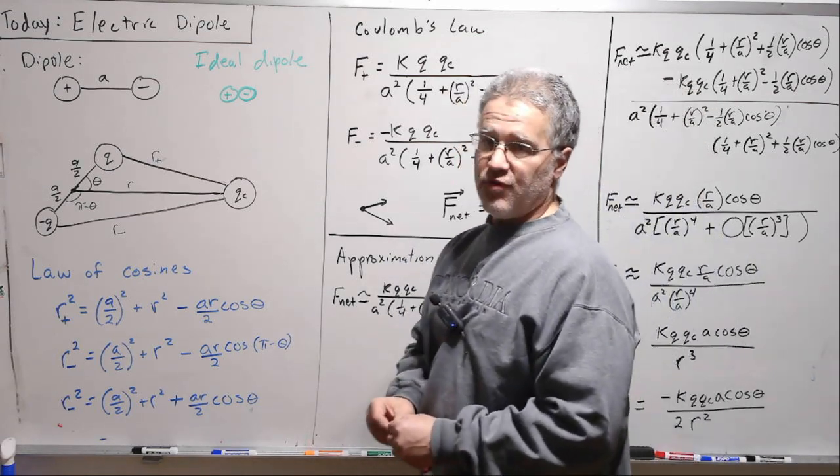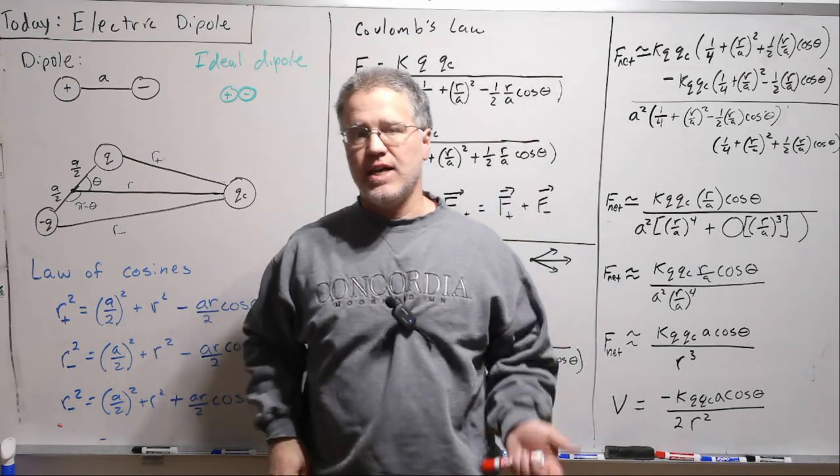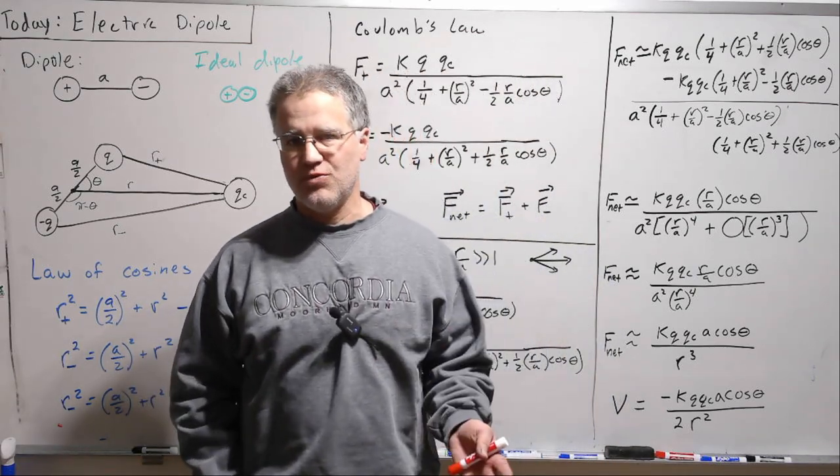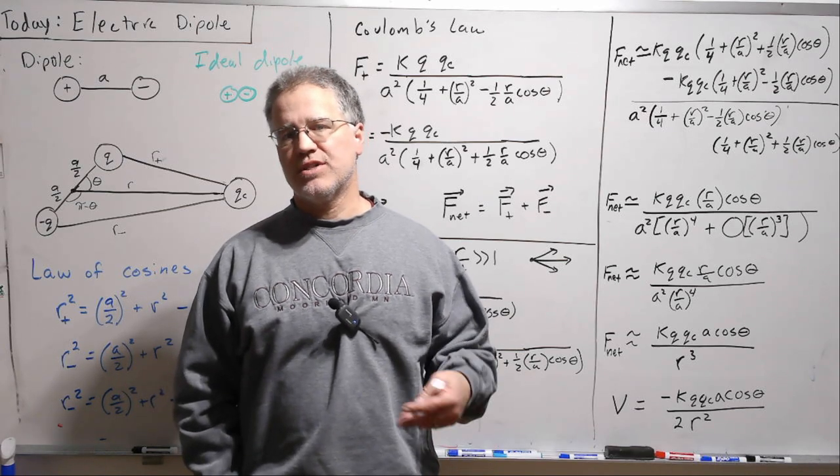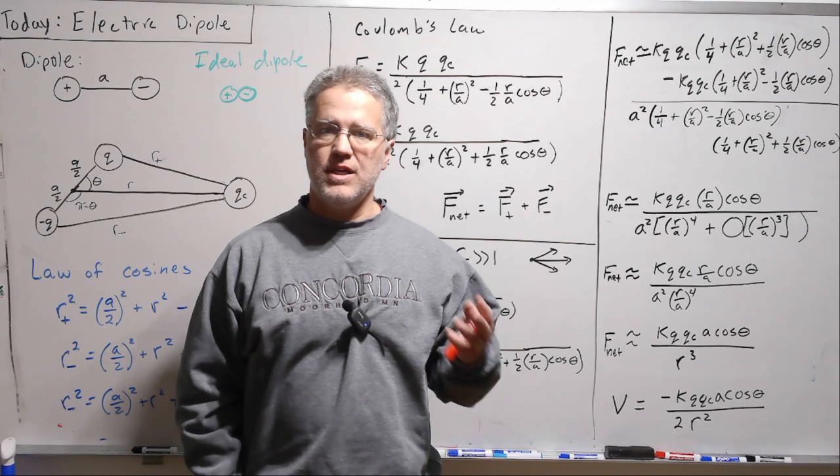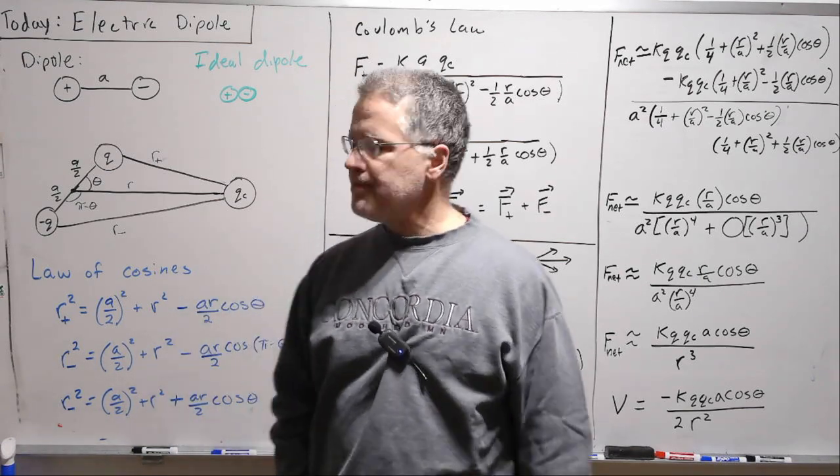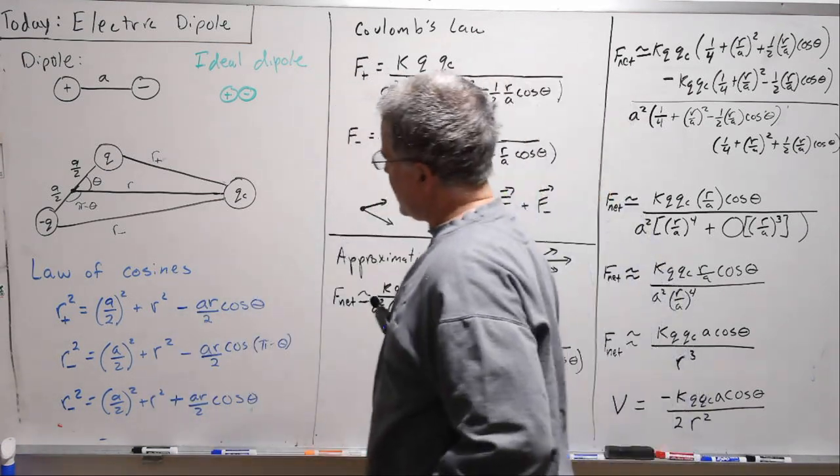We're going to derive some formulas for real dipoles, and then we're going to look at approximations, which is almost what we always do. Those approximations are really rigorous formulas for the point dipole or the ideal dipole. All right, but let's start with this real dipole and see what's going on here.